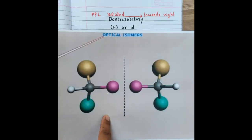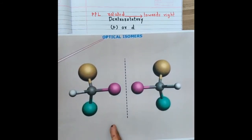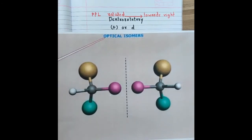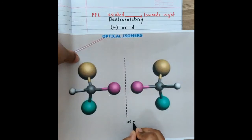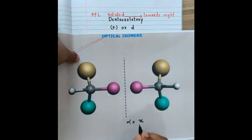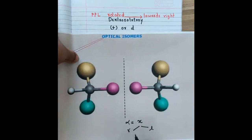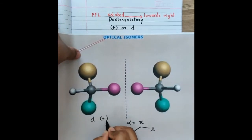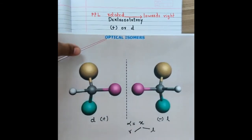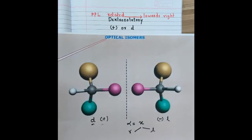Out of these two non-superimposable isomers, one will be dextrorotatory and the other levorotatory. One will rotate the plane of polarized light towards the left by some angle X, and the other will rotate it towards the right by the same angle. Their angle of rotation alpha remains the same, but in opposite directions.